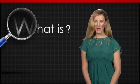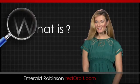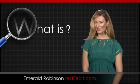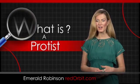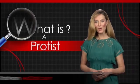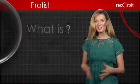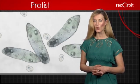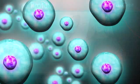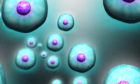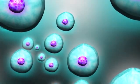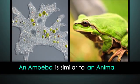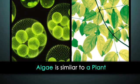Hi, I'm Emerald Robinson and in this What Is video, we're going to discuss a group of organisms called protists. Protists are organisms that have a nucleus and other membrane-bound organelles. Most are one-celled and they are classified as plant, animal, or fungus-like, meaning they have things in common with these organisms, but they're not quite the same thing.